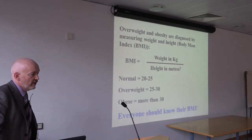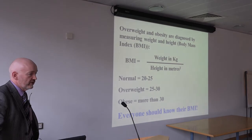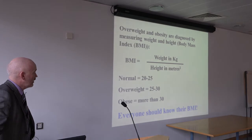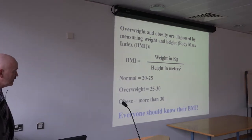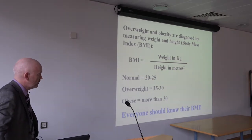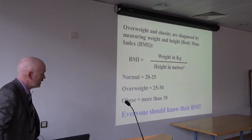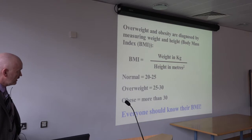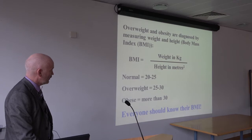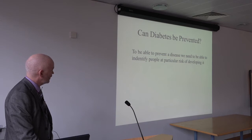Our diets are increasingly unhealthy, and unfortunately the least healthy foods tend to be the cheapest. Everyone should know their body mass index: a normal BMI is 20–25, overweight is 25–30, and obese is over 30. Almost two-thirds of our population are now either overweight or obese, a proportion that has increased substantially over the last 20 to 25 years.